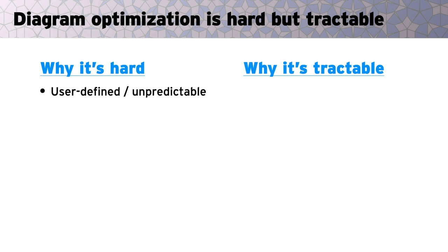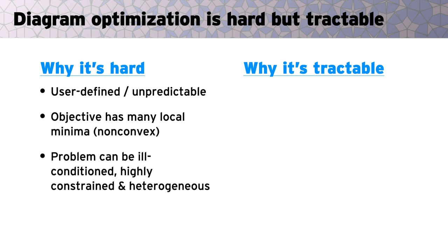Also, since there are many valid diagrams, there often isn't just one local minimum. Many of the common objectives and constraints one may want to use in diagramming are non-convex. Finally, the objective can be ill-conditioned, because the many energies in it may behave differently, and it may be subject to many hard constraints.